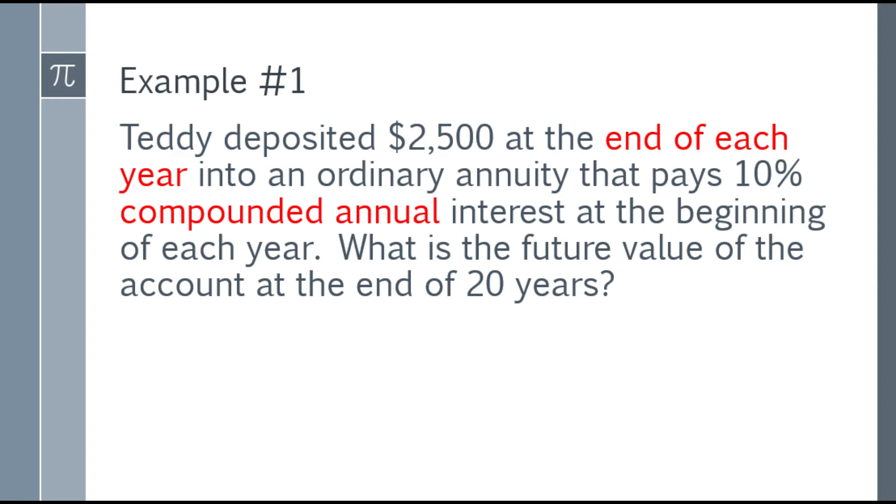Paano ba natin malalaman kung ordinary annuity ito? Dapat magkakasundo yung cash flow dun sa compounding frequency. Let's focus on the highlighted in red. In example 1, end of each year payment with compounding annually - they match, so ordinary annuity yun. Kapag hindi siya end of each year, if it's every 2 years or quarterly with compounding annually, hindi siya ordinary annuity.